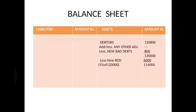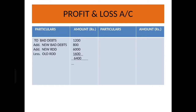Let's see how to solve this. First, in the balance sheet: debtors 1,20,800. No other adjustment, so dash. Deduct new bad debts of 800, giving 1,20,000. Then calculate 5% on 1,20,000, which is 6,000. So your final debtors figure is 1,14,000. Then for the profit and loss account: old bad debts from the trial balance 1,200, add new bad debts 800, add new RDD 6,000, less old RDD 1,600. Your final answer is 6,400.